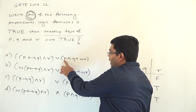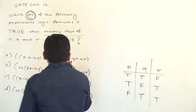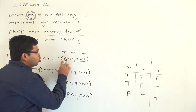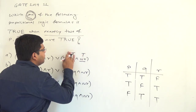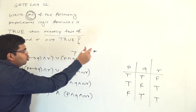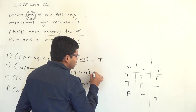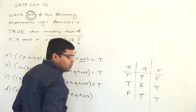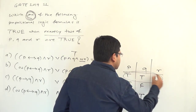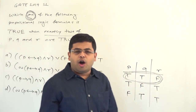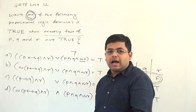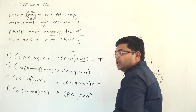True AND true AND true becomes true, and by the domination law, something OR true becomes equal to true. So this will be true, and therefore options A, B and C will all be true. For this particular combination of truth values P, Q and R, all three options are looking like answers because all the formulas evaluate to true.